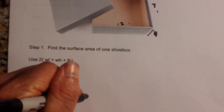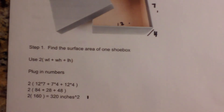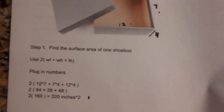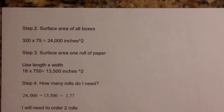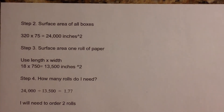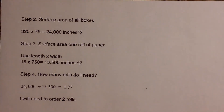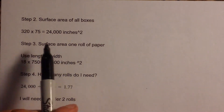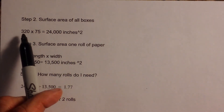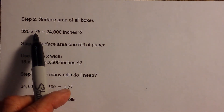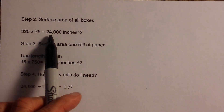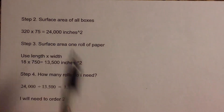So that is for one shoebox. The next step is we need to find the surface area of all of the shoeboxes. So we will take 320 times 75, because we have 75 boxes, and that's 24,000 inches squared.